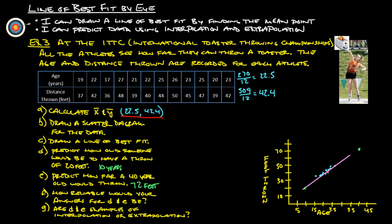Are our D and E examples of interpolation or extrapolation? Those would both be extrapolation because they're outside of the data points. If you were to say, 'How far should a 20-year-old be able to throw?' then we'd just go right up to the line - that would be interpolation.